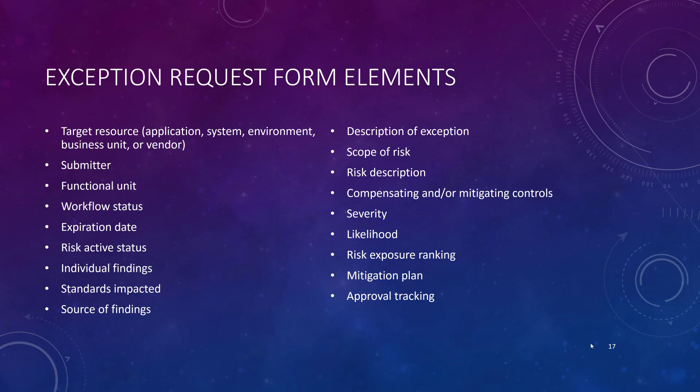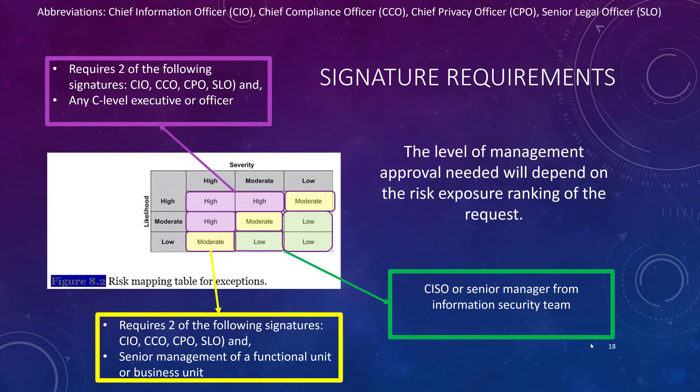A good bit of information has to go into making these decisions, and you want to document all of this. As you're looking at the likelihood and severity of a particular attack and considering a possible exception, for low-level risks you're just going to have the Chief Information Security Officer or a senior manager from the information security team do the approval. For moderate-level risks, you've got two of the senior levels involved. And for high-level risks, you've got a C-level executive or two operating officers involved in those decisions.